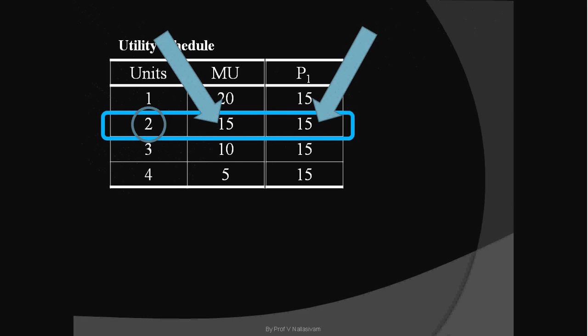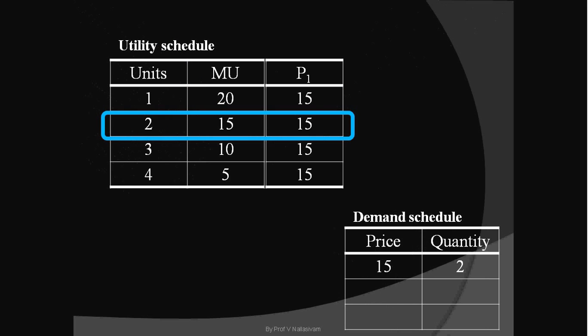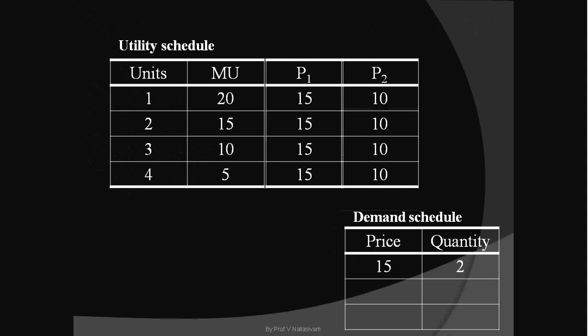The implication is: at 15 rupees price, the consumer buys two units of the commodity. This is a piece of information we need to construct our demand schedule, and it is shown separately in the demand schedule. Let us assume the price has fallen to 10 rupees.